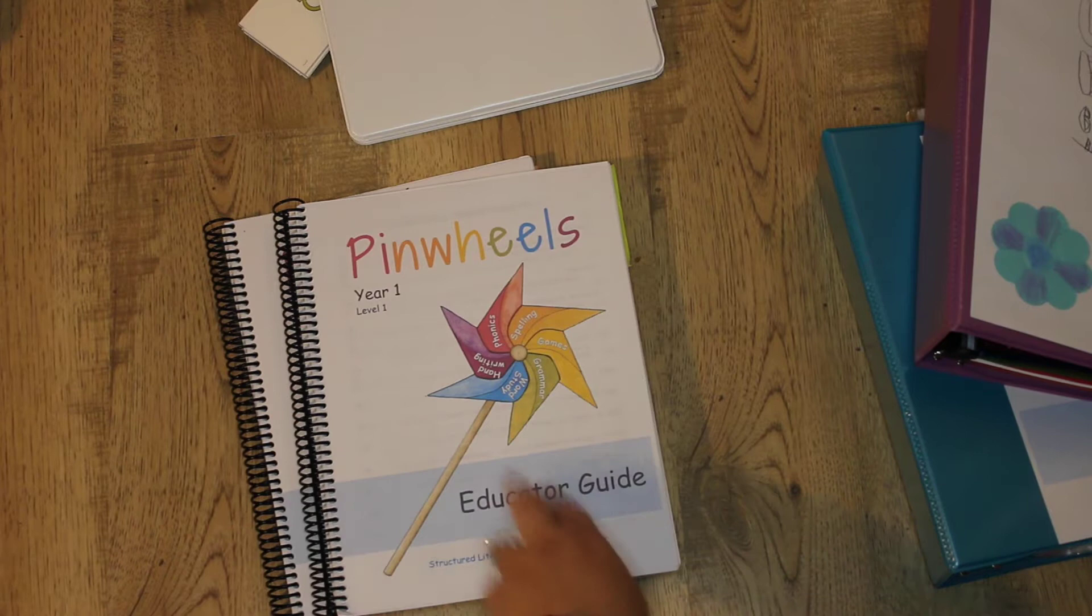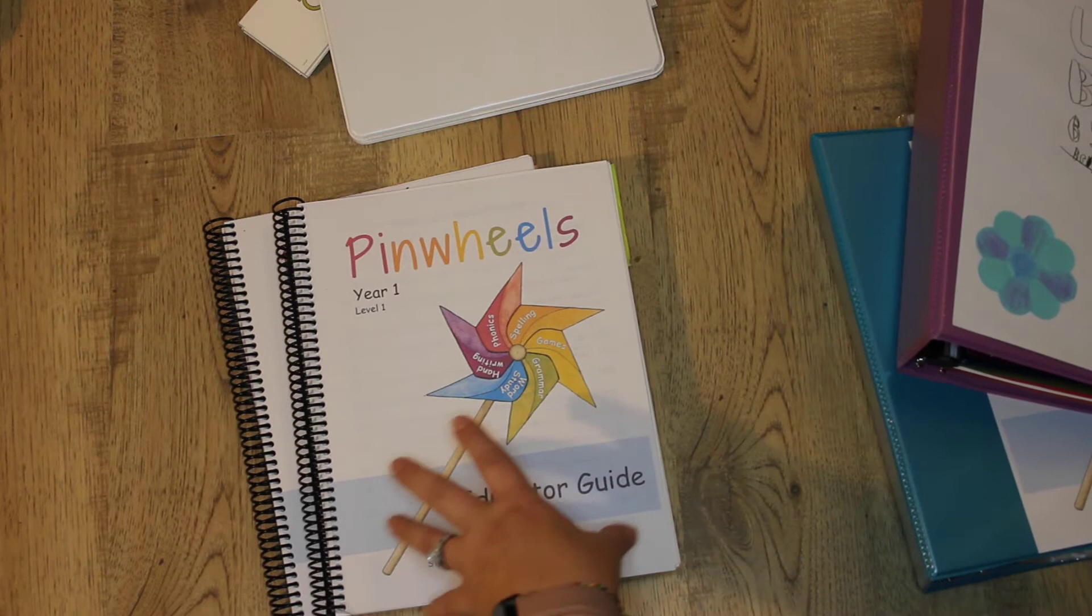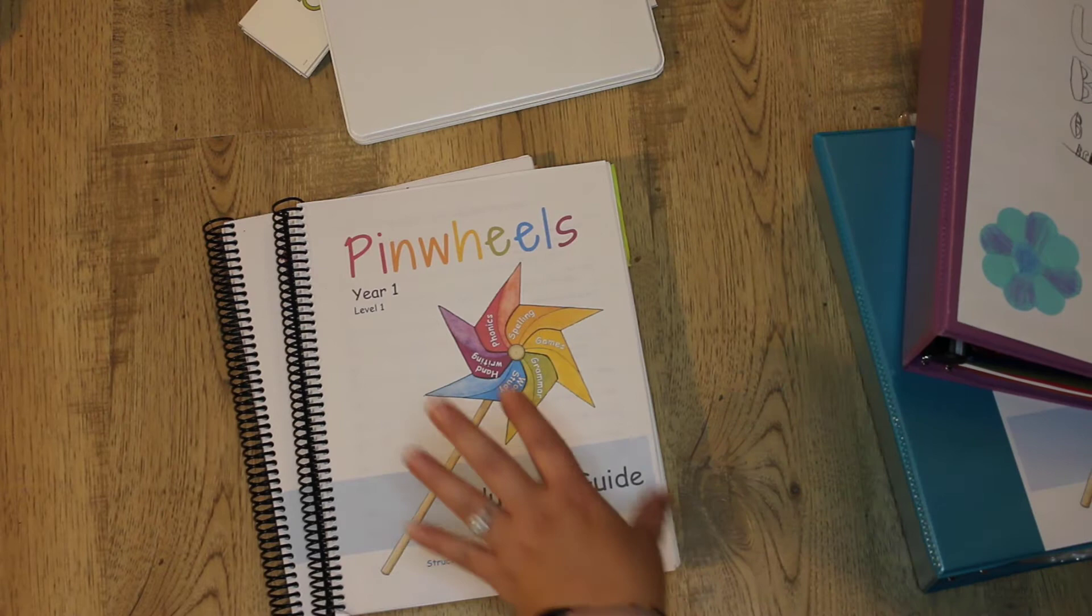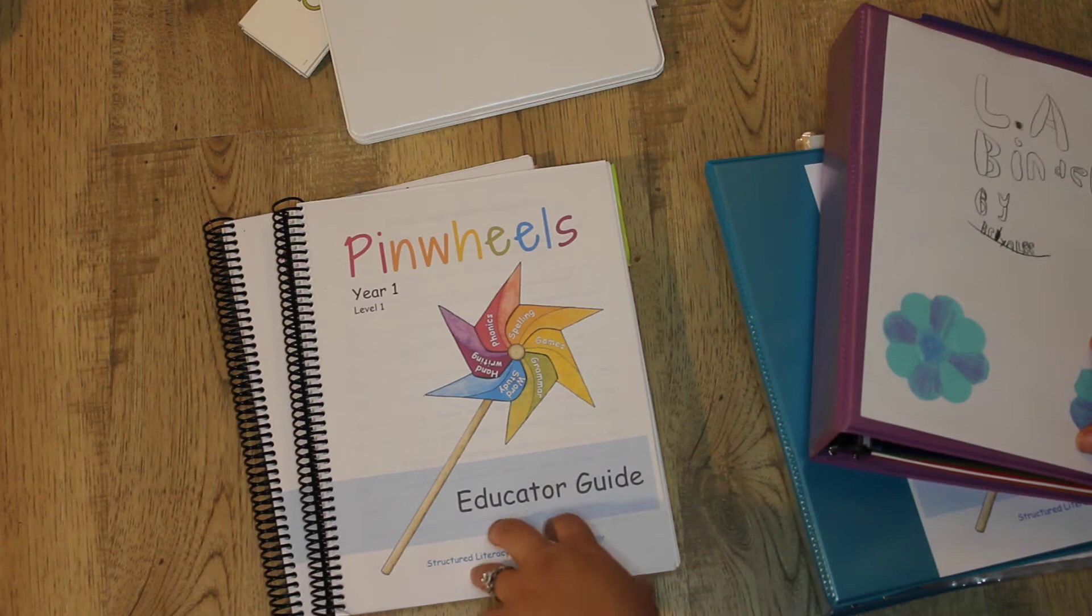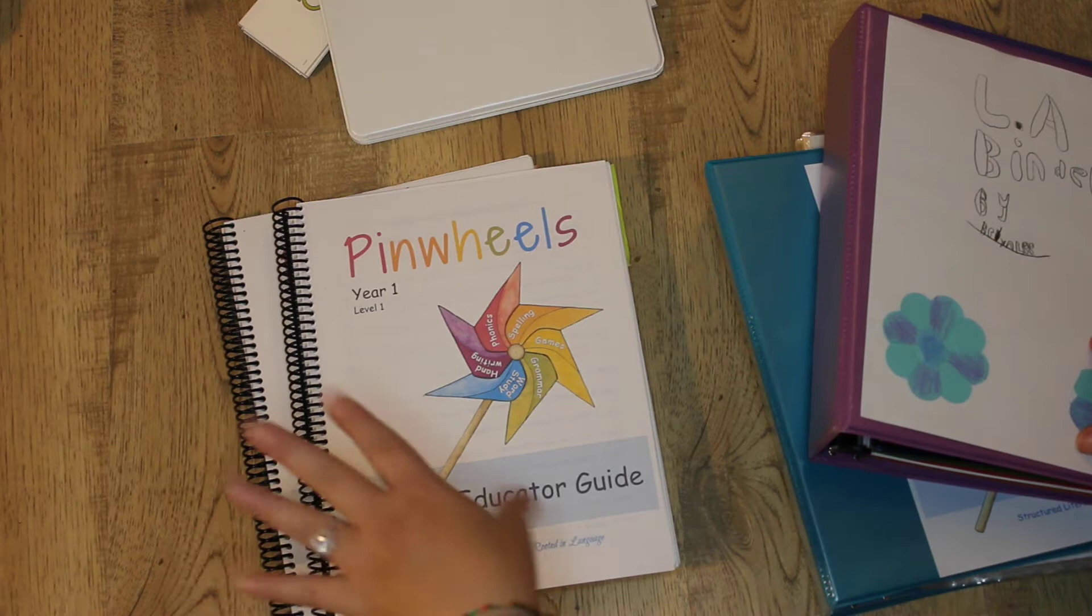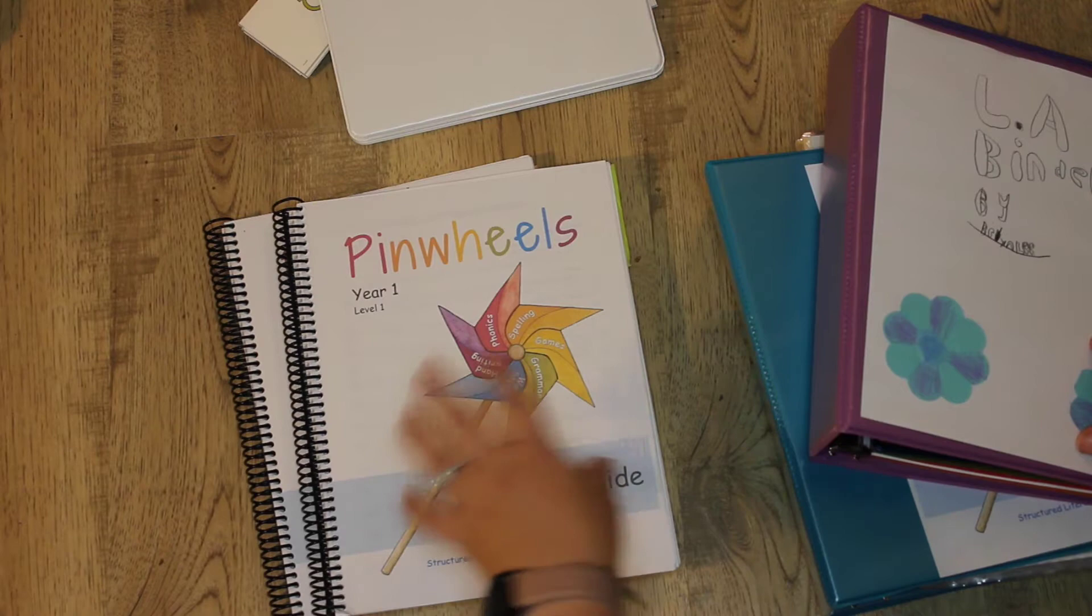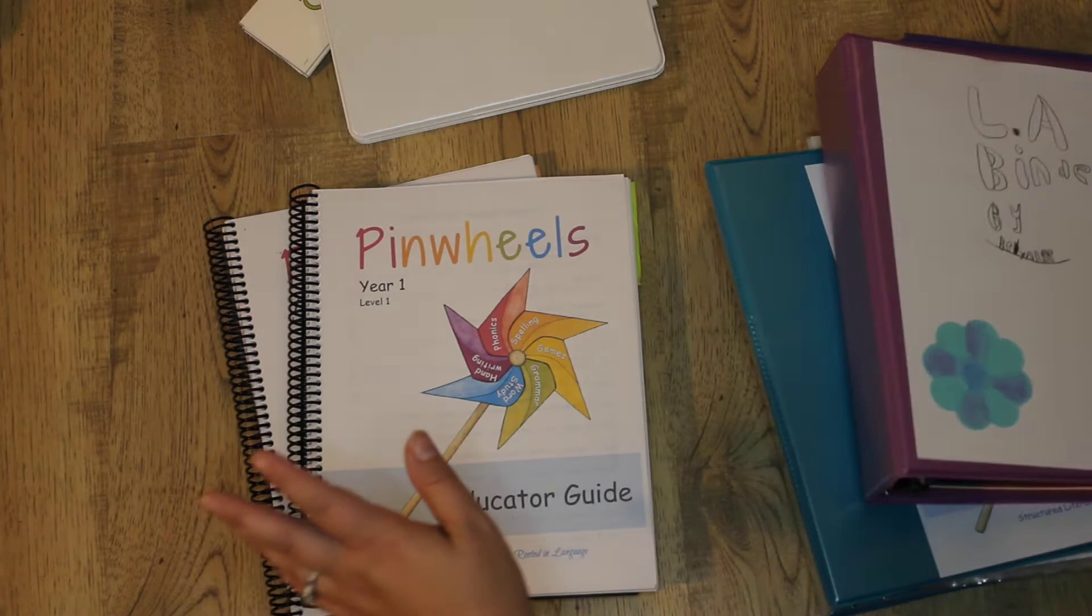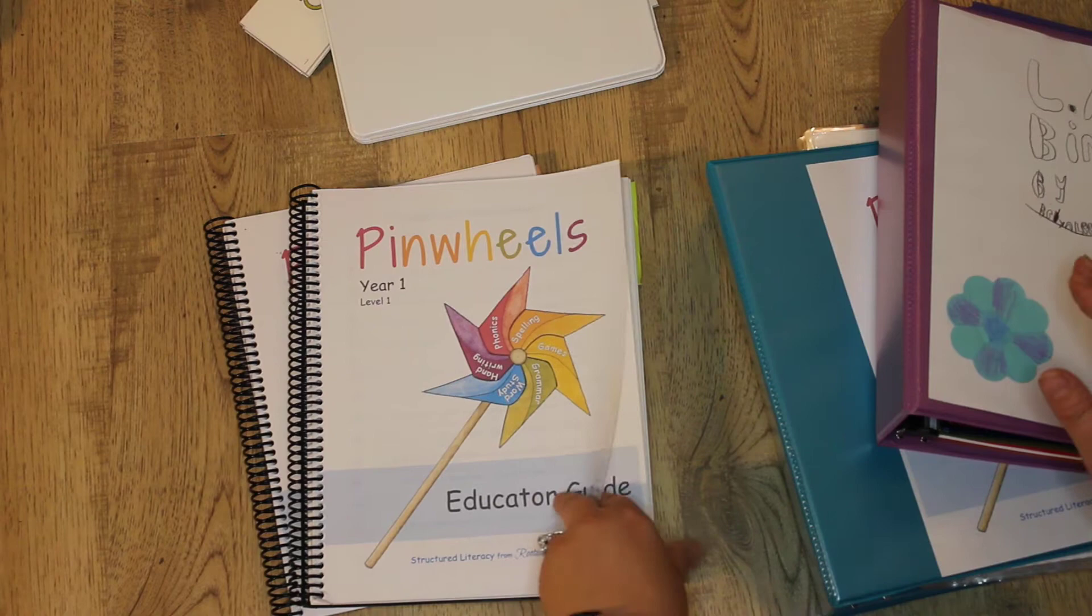This is Pinwheels Year One Level One. It also has a level two that's meant to use over the course of a year to two years, like a kindergarten level. But I think you could almost even start this in preschool for some learners. This program is a PDF download so you print everything and make everything yourself. I have chosen to do spiral binding for the educator guide and for the student notebook. The three ring binder is also an option if you want the ability to move things around.